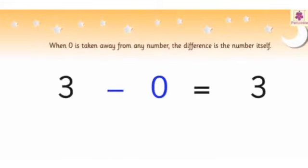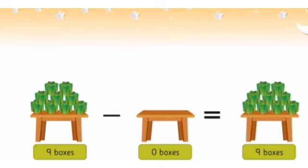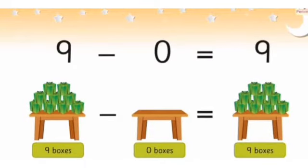Once 0 is taken away from any number, the difference is the number itself. You can see: 3 minus 0 equals 3. In the next picture, you can see on one side nine boxes are given on the table and the other table has zero boxes. Now we subtract, so we will get nine boxes. That means 9 minus 0 equals 9. So students, remember: subtracting 0 from any number does not change the number.